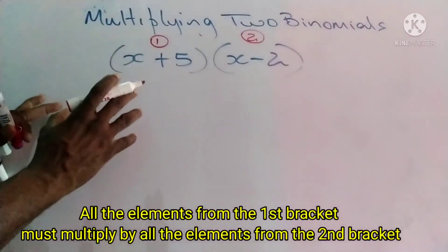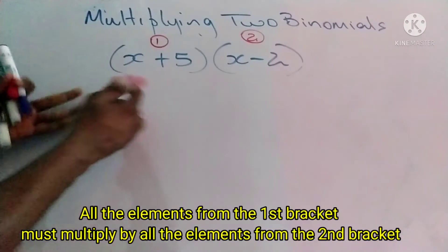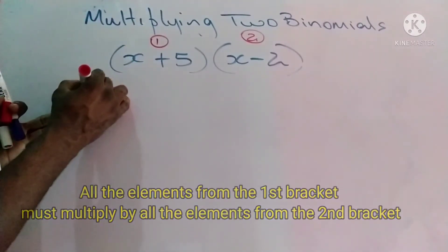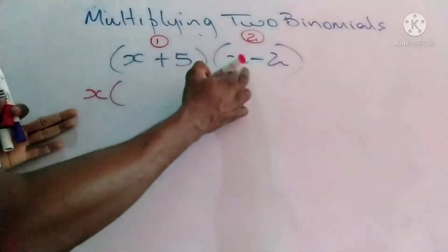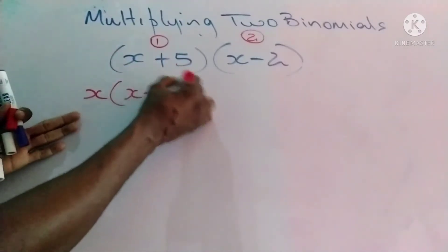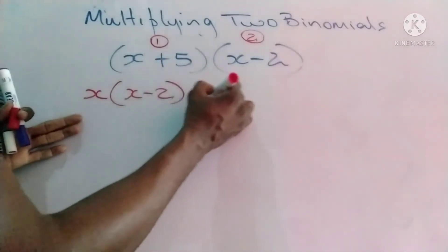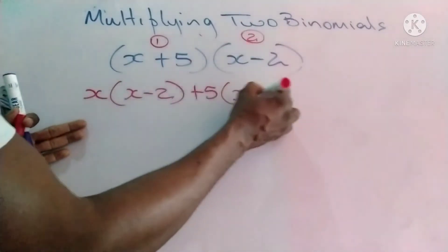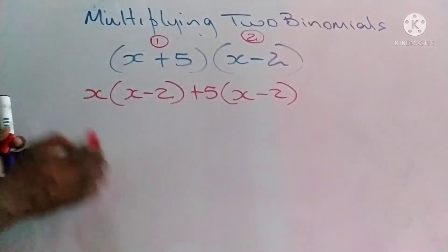In doing so, we can rewrite this as x multiplying by (x minus 2), and positive 5 multiplying by (x minus 2) as well. From here, we're simply doing distribution. We're distributing x to x,